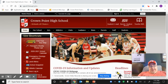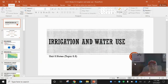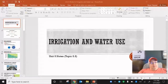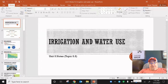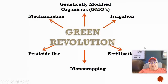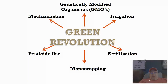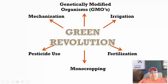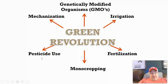AP Environmental Science. Today we are going to continue with Unit 5 — this is a really big unit. We're going to continue our discussion about the Green Revolution and all the techniques used to feed 7.8 billion people. We've already talked about mechanization, monocropping, GMOs, and pesticide use. Today we're going to talk about irrigation.